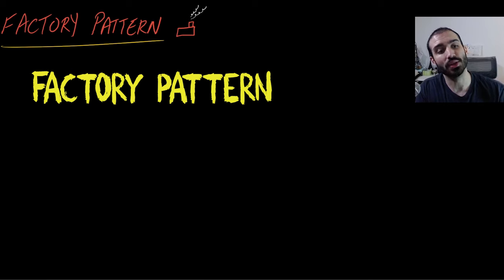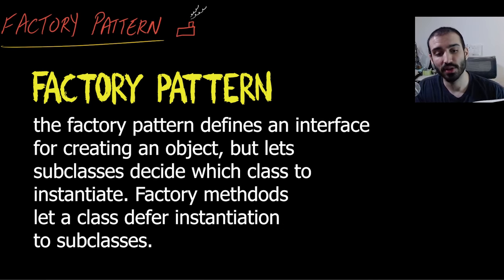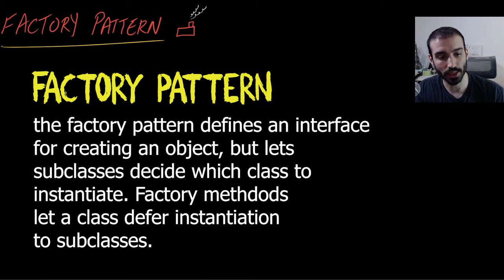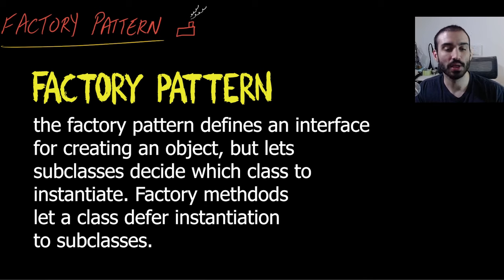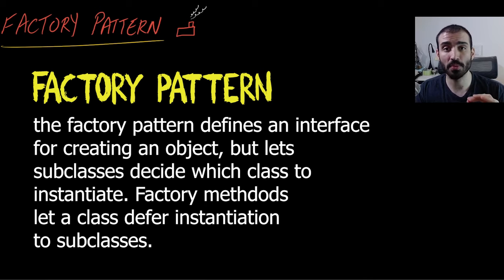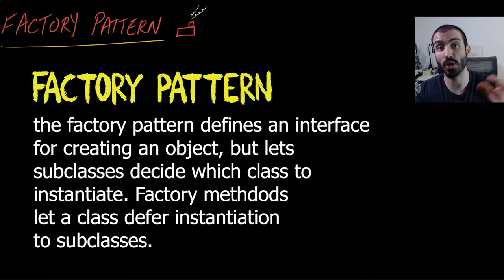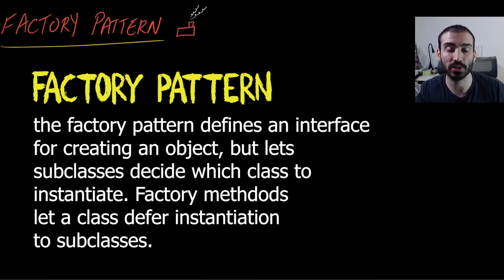Per the definition in this book: the factory pattern defines an interface for creating an object, but lets subclasses decide which class to instantiate. Factory methods let a class defer instantiation to subclasses. Let's tease this definition apart. We're saying we want to define an interface for object creation — we're going to create an object that contains logic on how to create other objects. It's essentially an object that knows how to construct other ones, with specific logic built in so it can do it pretty intelligently.